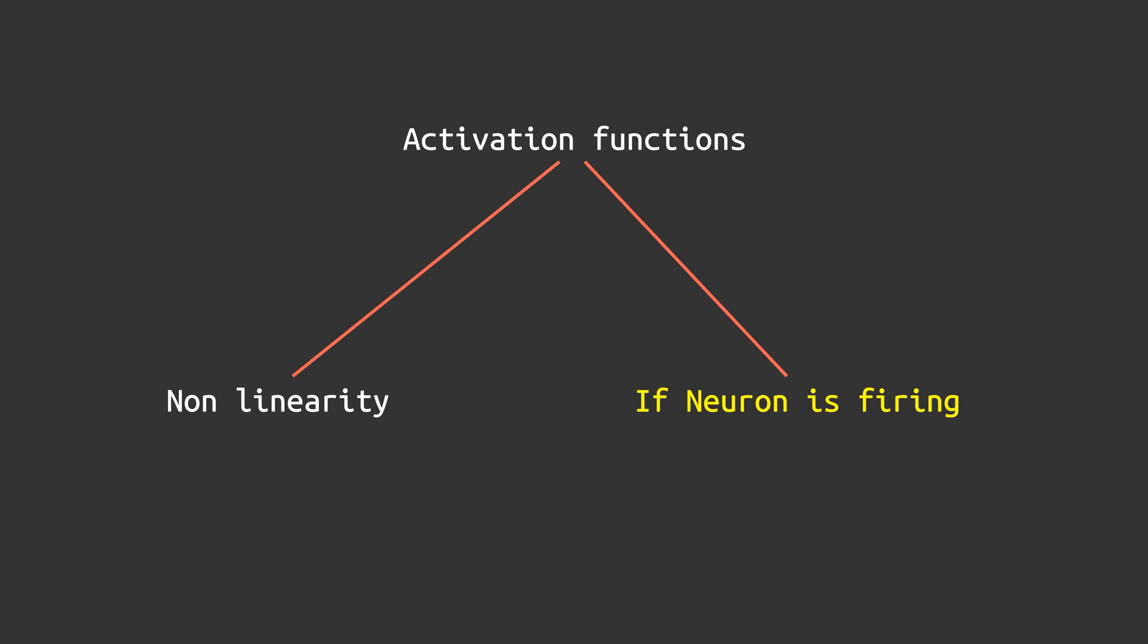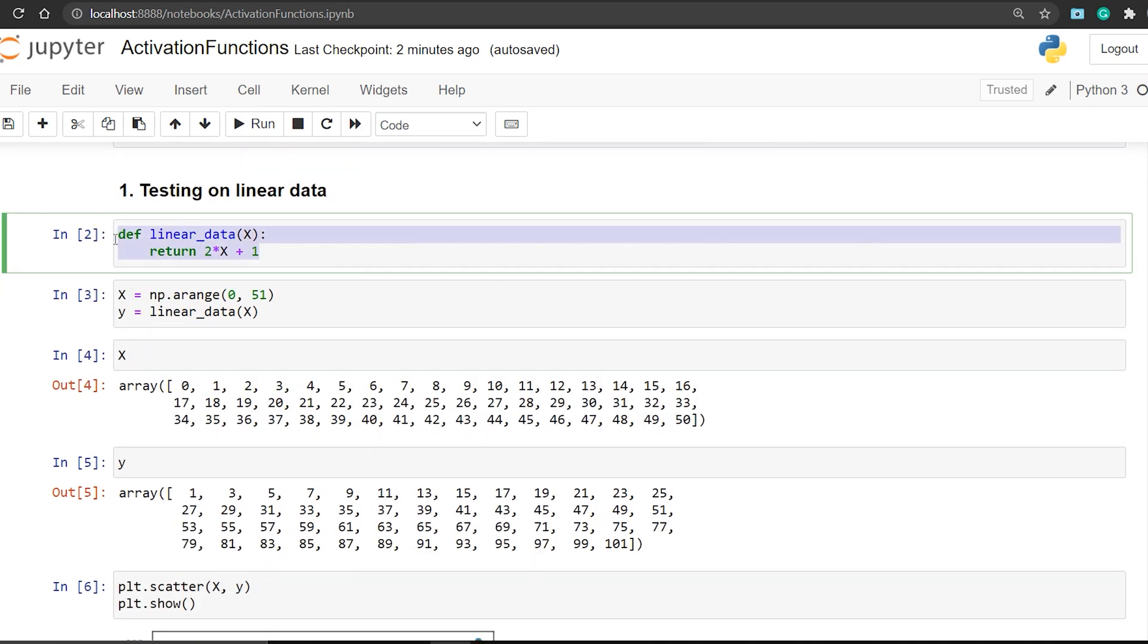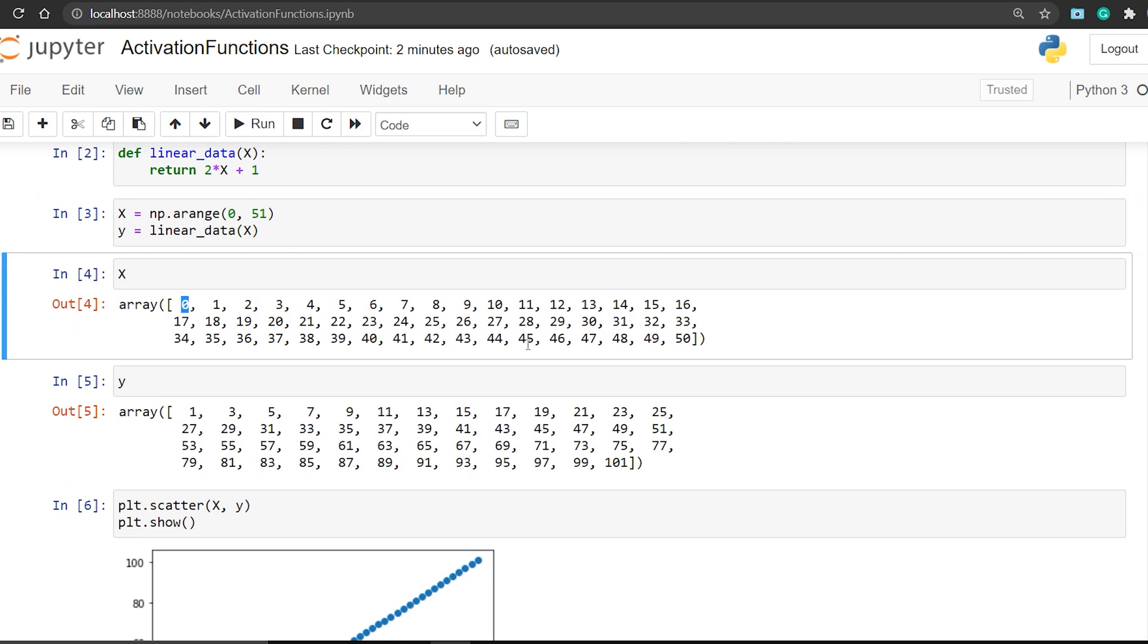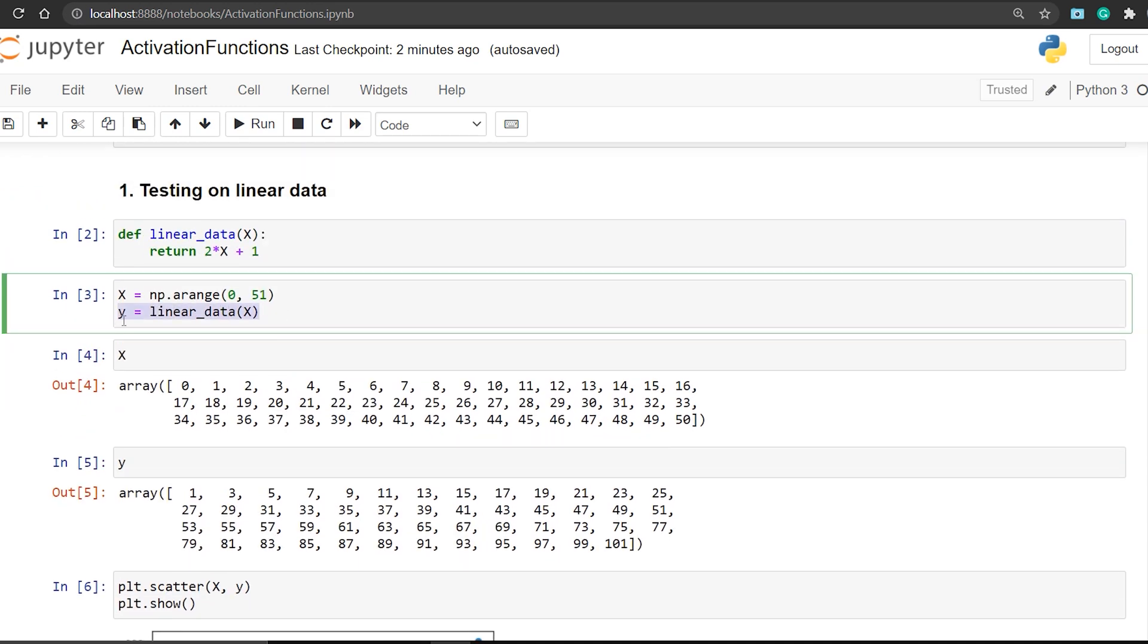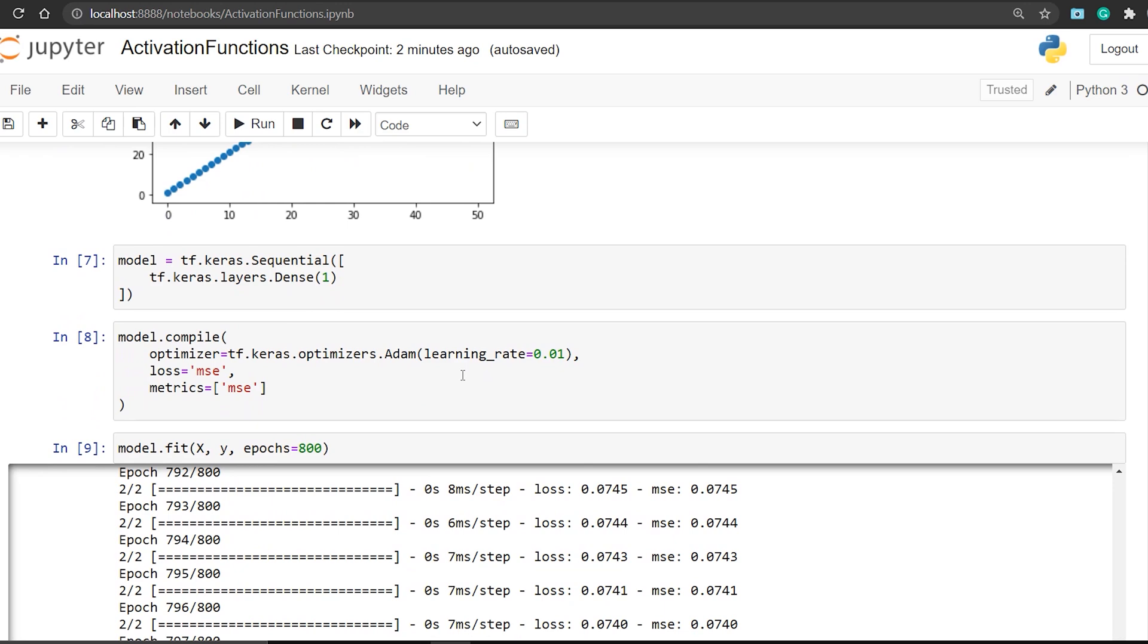So let's check out, can we really fit on non-linear data after using activation functions? First, I have created a linear data function which will make linear data for us. The input matrix x is values arranged from 0 to 50, and the y is the transformation from the linear data function. You can see the graph of this; it is completely linear data.